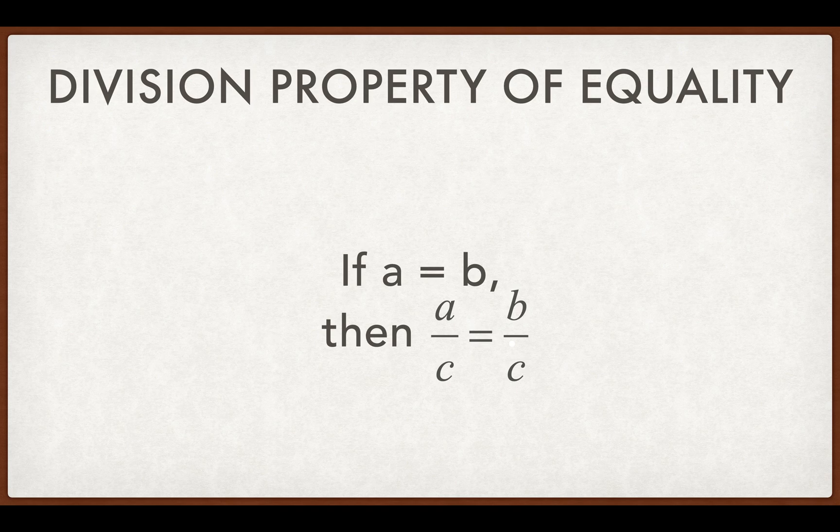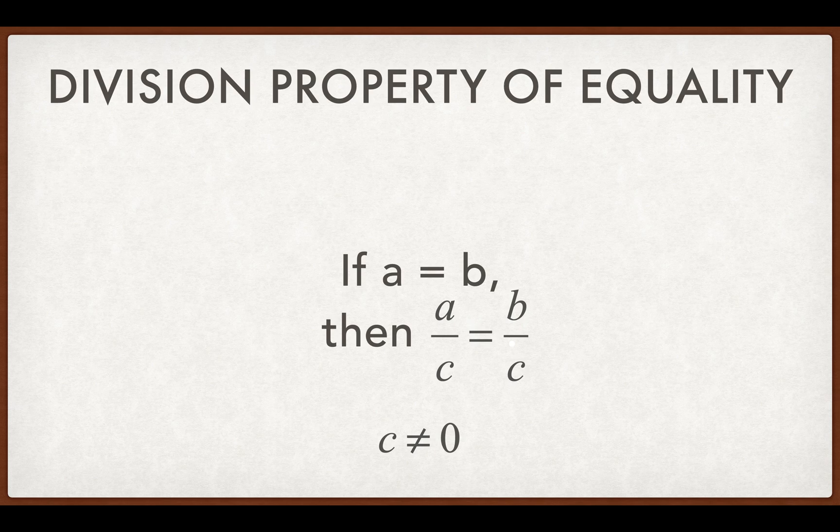Finally, the division property of equality. If A is equal to B, then A divided by C is going to be equal to B divided by C. This is kind of the same as all the other ones. As long as we're doing the same thing to both sides, they should remain equal. Also, as long as C doesn't equal zero because you cannot divide by zero.